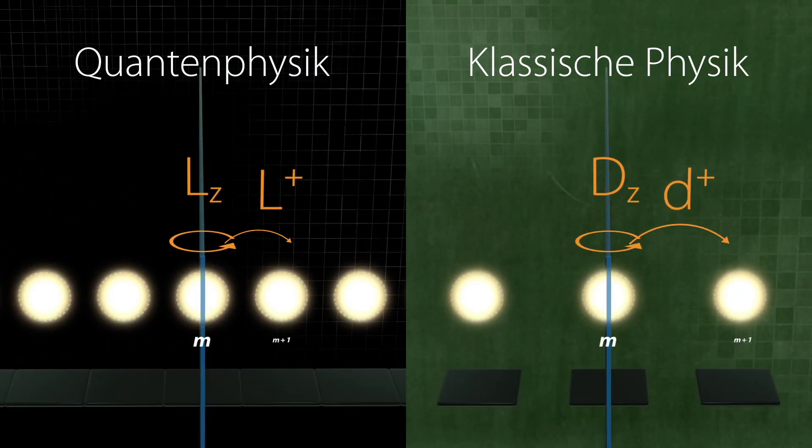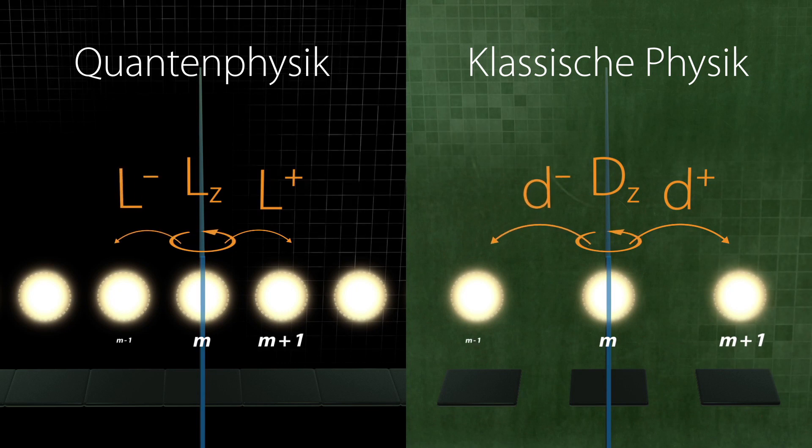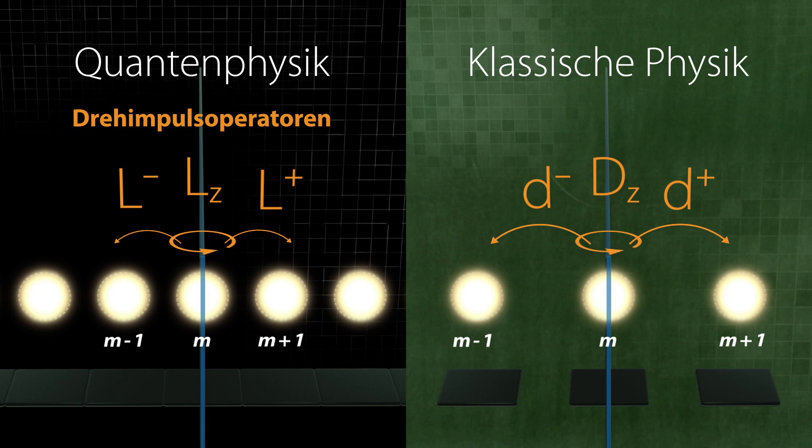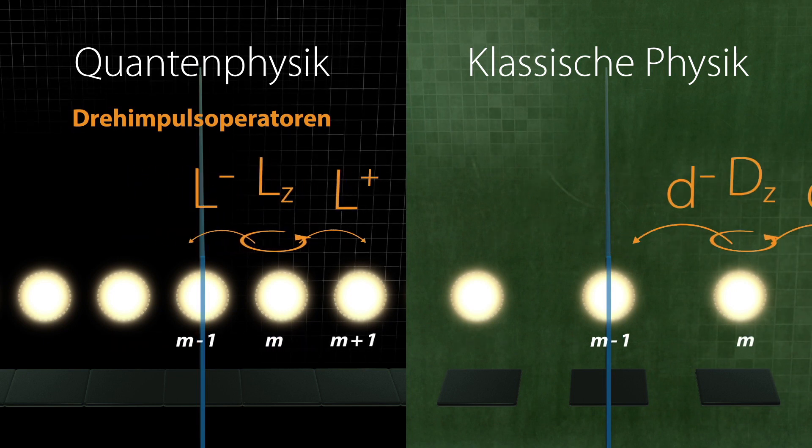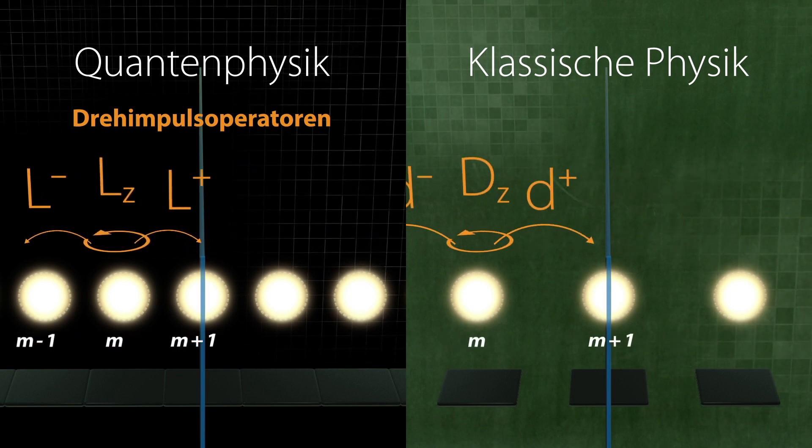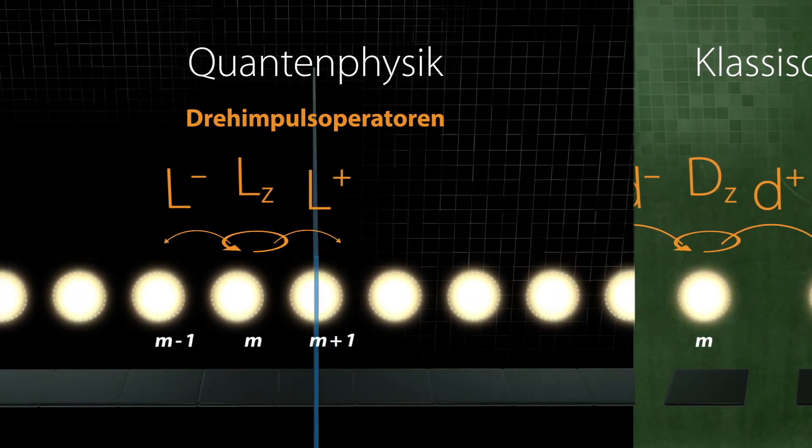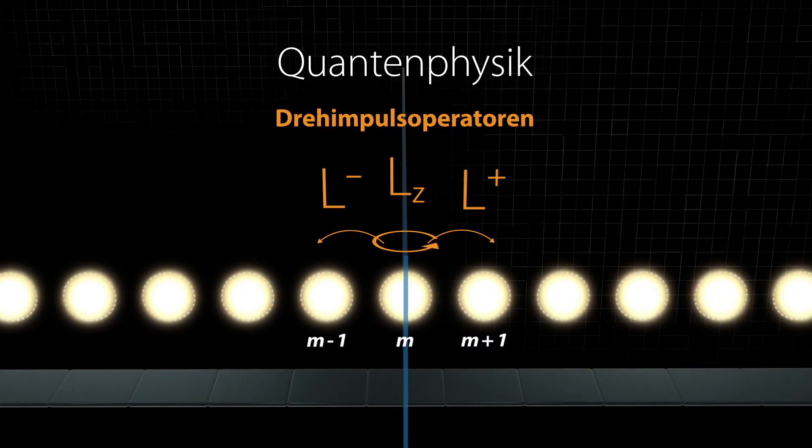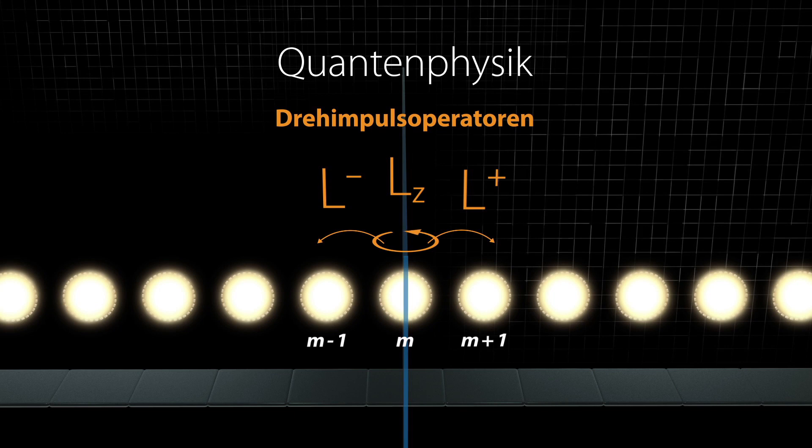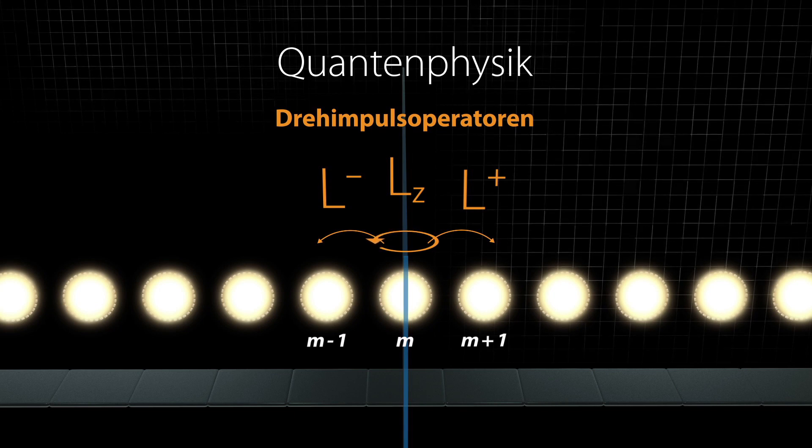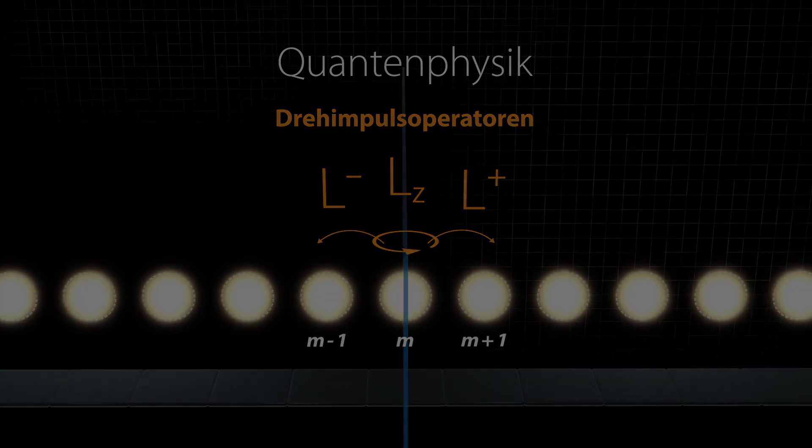For historical reasons, in quantum mechanics, the operators Lz, L plus and L minus are called angular momentum operators. However, the only thing these operators have in common with the classical angular momentum is the physical unit joule second. They have more similarities only in very few special cases.